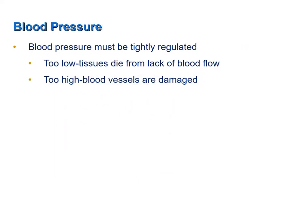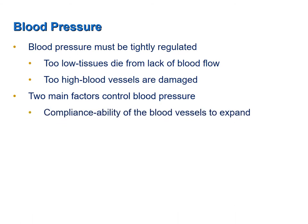Blood pressure must be tightly regulated at all times. If blood pressure is too low, there is not sufficient pressure gradient to supply tissues with adequate blood flow, resulting in tissue death. If pressure is too high, blood vessels can be damaged. Two main factors are the major determinants of blood pressure. Compliance is the ability of arteries to stretch as arterial blood volume increases, which allows arteries to receive greater amounts of blood with minimum impact on blood pressure.